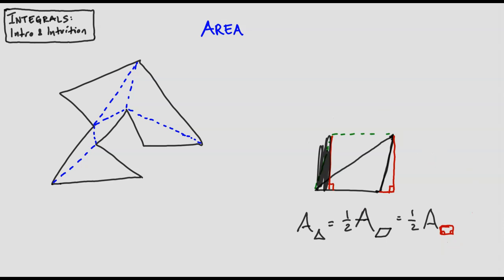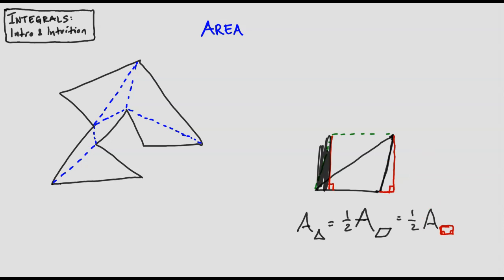Everyone knows the area of a rectangle is its base times its height. The base of the rectangle is this stuff plus the little bit from the triangle we moved—in other words, the base of the original parallelogram. And the height of the rectangle is obviously the height of the original triangle. So the area of that rectangle is the base of the triangle times the height of the triangle—our famous formula.